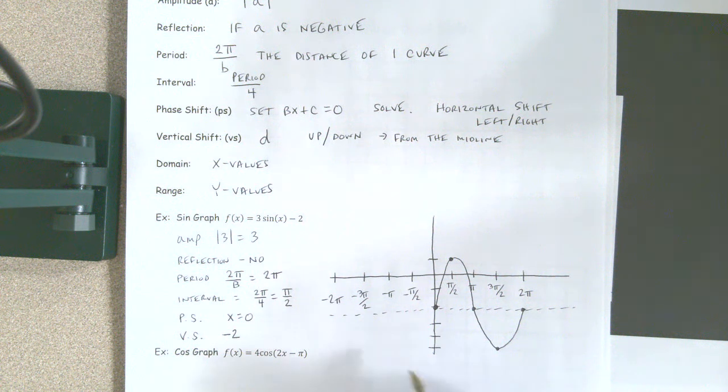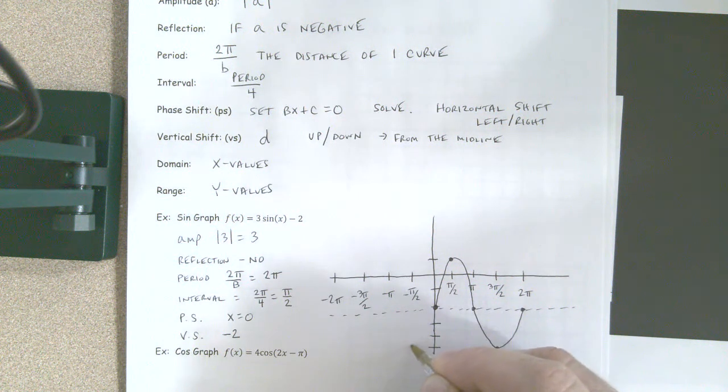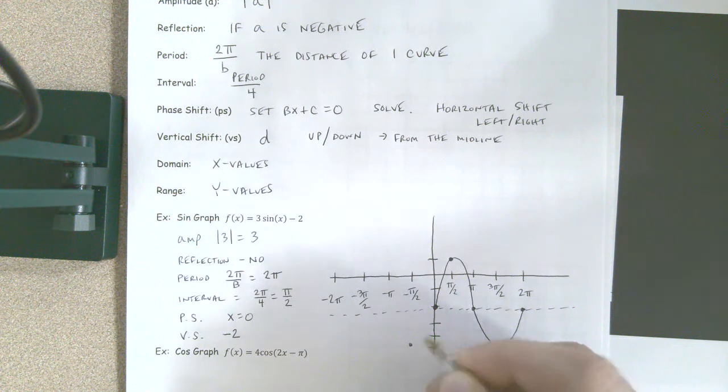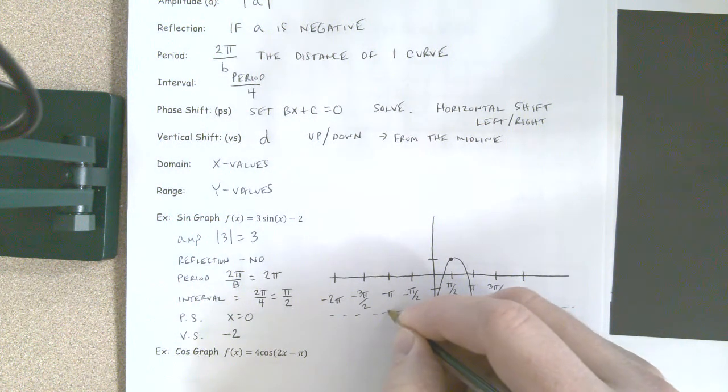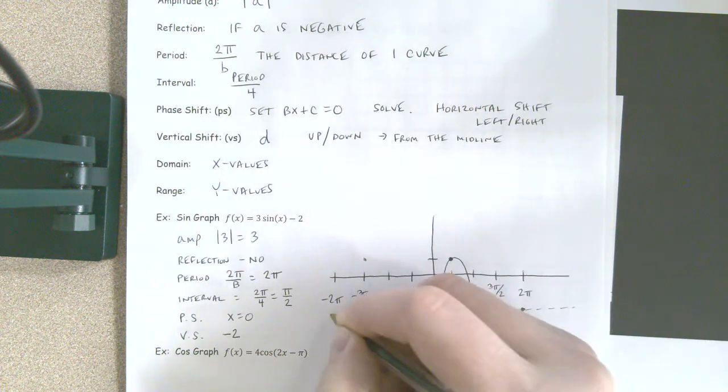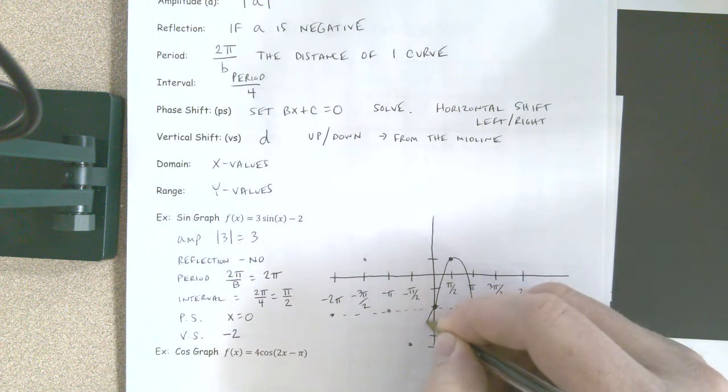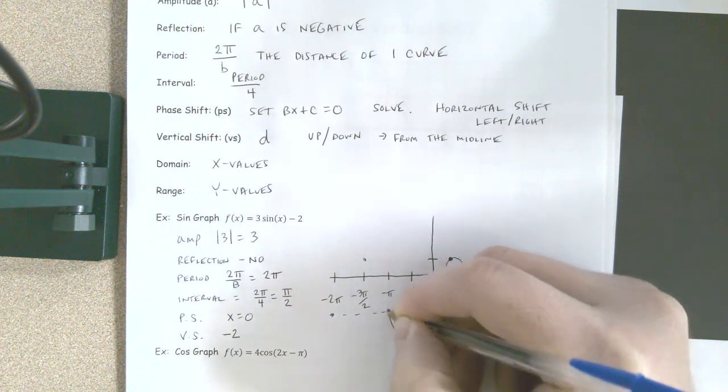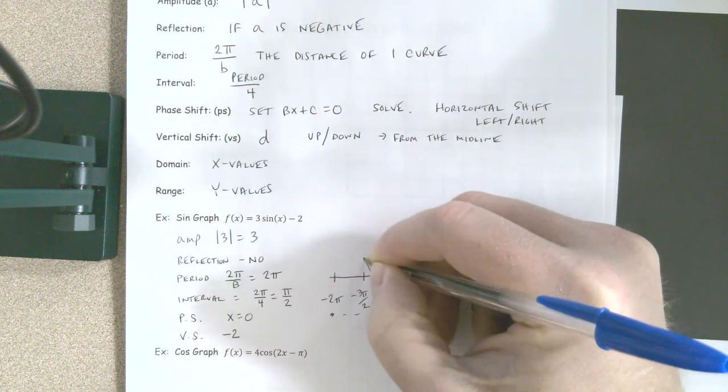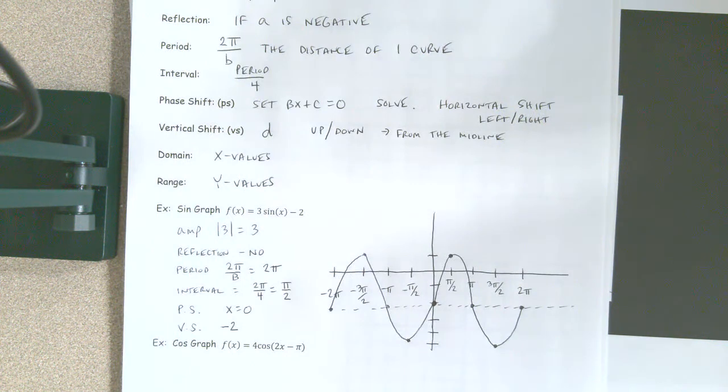Now, if I'm going to continue my curve the other way, this is going to continue to go down, so I go down here to 3, I'm back at the midline, I'm back up 3, and then I'm back to my... So if I were to extend my second curve, it's going to look something like that, and that would be two full periods for the curve.